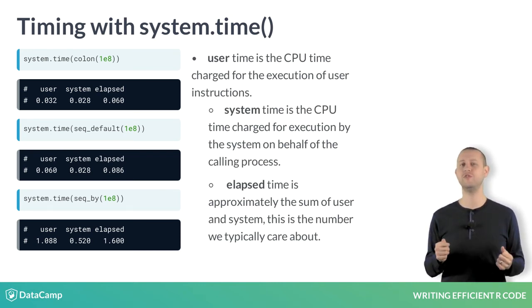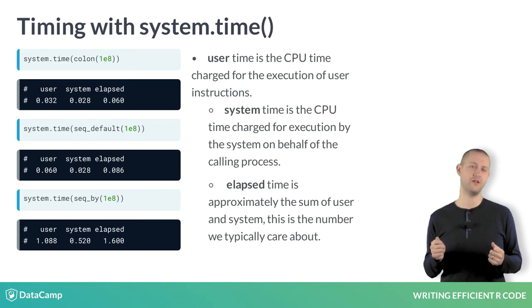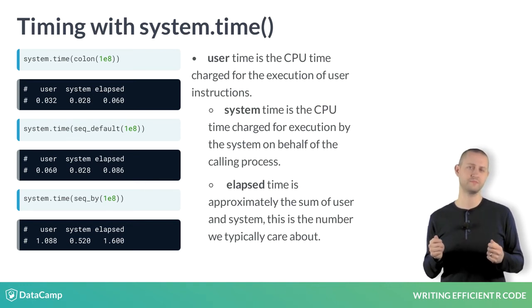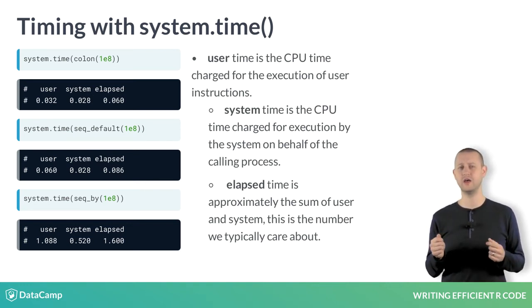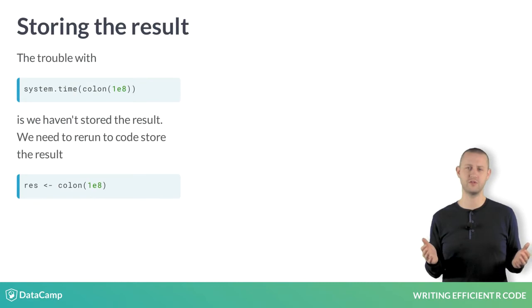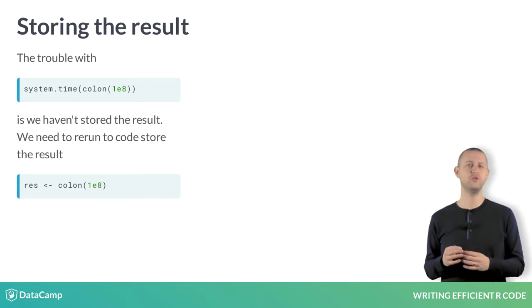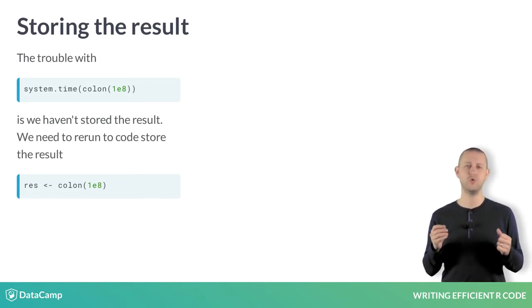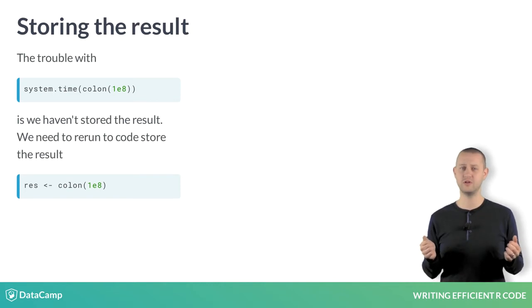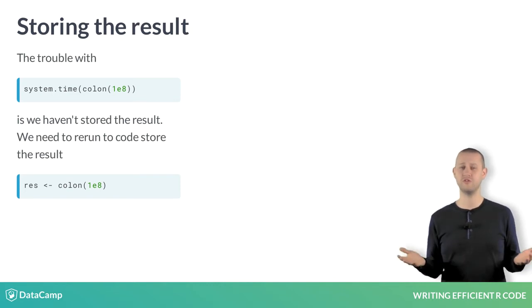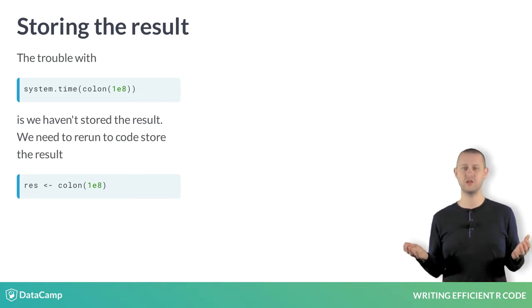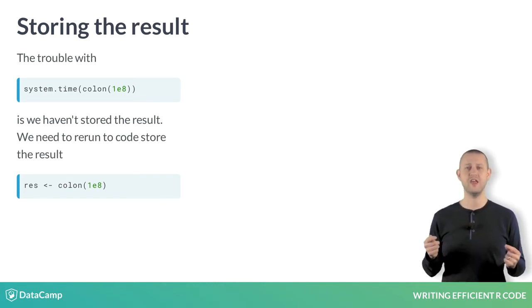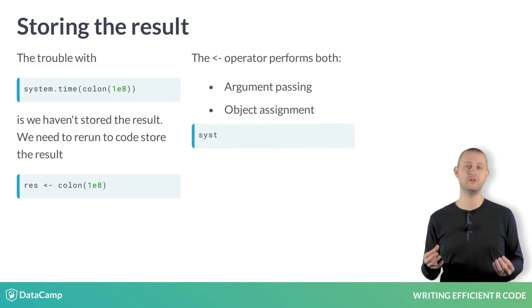I often use system.time during an analysis. I set my code running as I leave the office, and want to know how long the job took when I return the next morning. However, I also want to use the result. In this case, we use the arrow operator.